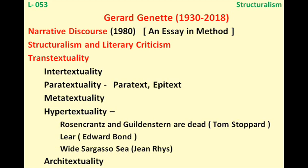Paratextuality can occur from one chapter to another, or in the title, epigraph, or preface — but within the same book. Under paratextuality there are two categories. The first is peritext, where references are made to parts of the same book: prefaces, captions, chapters, titles, or other notes contained within it. The second is epitext — something apart from the book itself, such as interviews, reviews, additional notes, letters, or appendices written outside the main text.